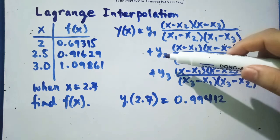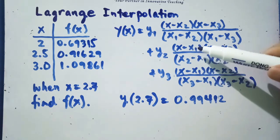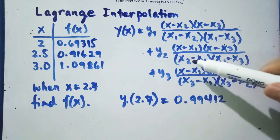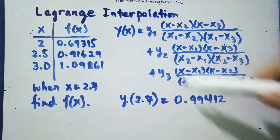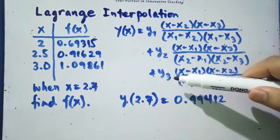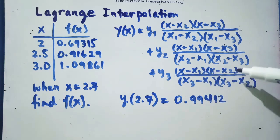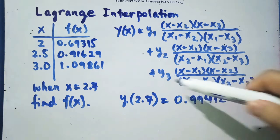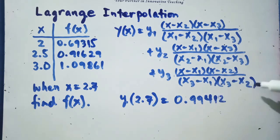Plus y sub 2 times x minus x sub 1 times x minus x sub 3, divided by x sub 2 minus x sub 1 times x sub 2 minus x sub 3. Plus y sub 3 times x minus x sub 1 times x minus x sub 2, over x sub 3 minus x sub 1 times x sub 3 minus x sub 2.